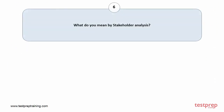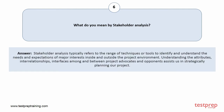Question number 6: What do you mean by stakeholder analysis? Your answer is: Stakeholder analysis typically refers to the range of techniques or tools to identify and understand the needs and expectations of major interests inside and outside the project environment. Understanding the attributes, interrelationships, and interfaces among and between project advocates and opponents assists us in strategically planning our project.